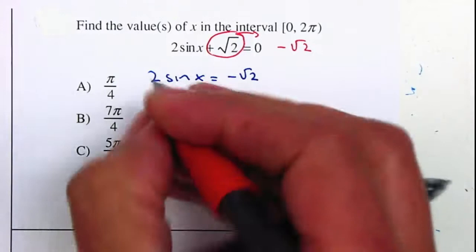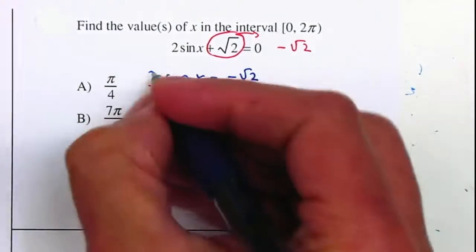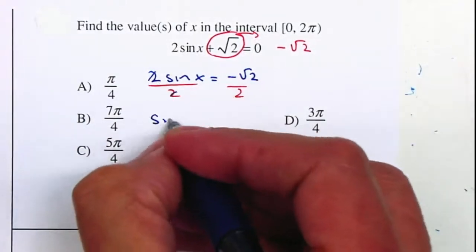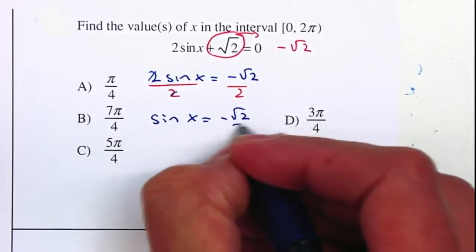I'm going to leave the x by itself, so I'm going to divide by 2. The 2's cancel. So sine of an angle equals negative square root of 2 over 2.